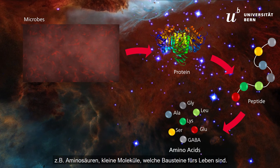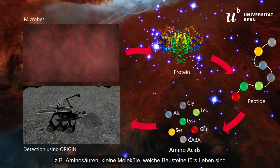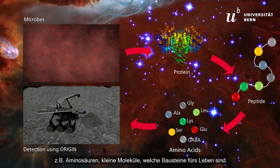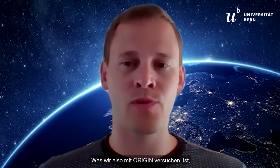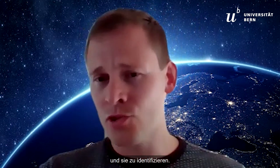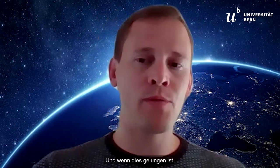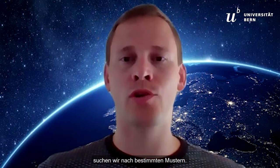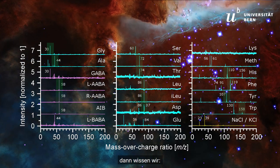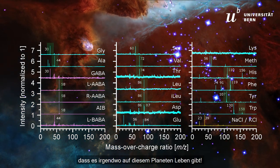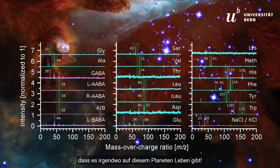What you can much more easily detect are waste products or products related to the activity of life. Those become, for example, amino acids, smaller molecules, and molecules that are used as building blocks for life. So what we try to do with Origin is really look for the building blocks of life and try to identify them. When we identify them, we look for certain patterns — if we see really enhanced concentrations of multiple amino acids, then we know there is a likelihood that life is present somewhere on this planet.